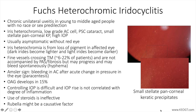On examination, typical findings include iris heterochromia, resulting from a decrease in the number of stromal melanocytes, with dark irides becoming lighter and light irides becoming darker, low-grade anterior chamber cell, posterior subcapsular cataract, and small stellate pan-corneal keratic precipitates. The important point about the keratic precipitates is that they cover the entire span of the cornea — you typically see these very fine stellate-like KPs on the corneal endothelium.